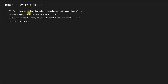The Routh-Hurwitz stability criteria is an analytical procedure to determine whether all the roots of a polynomial have negative real parts or not. This criteria is based on arranging the coefficients of the characteristic equation into an array called the Routh Array.